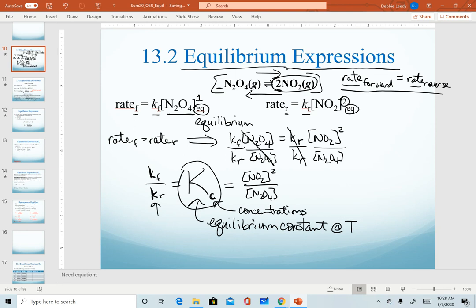The two key things to note: rather than going through this derivation every time, when we write our equilibrium expression, we always follow the same two key steps. The first is that we always write it as products over reactants. The second is that we're always going to assume for the rest of the semester that we're using elementary steps. So your coefficients will be your exponents.